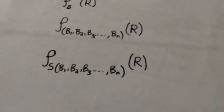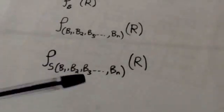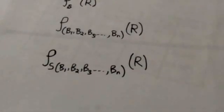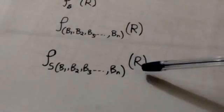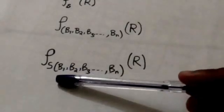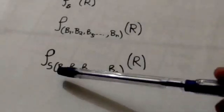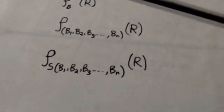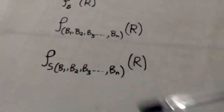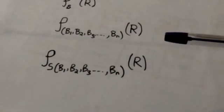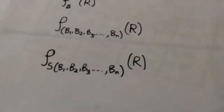This expression will change the name of relation R as well as the name of the attributes of relation R. The name of relation R will be changed to S. The attribute name a1 will be changed to B1, a2 to B2, a3 to B3, and so on up to attribute name an will be changed to Bn.